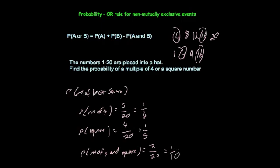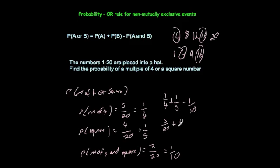The probability of a multiple of 4 or a square number equals 1 quarter plus 1 fifth minus 1 tenth. Converting to 20ths: 5 twentieths plus 4 twentieths minus 2 twentieths equals 7 twentieths. So the answer is 7 twentieths.